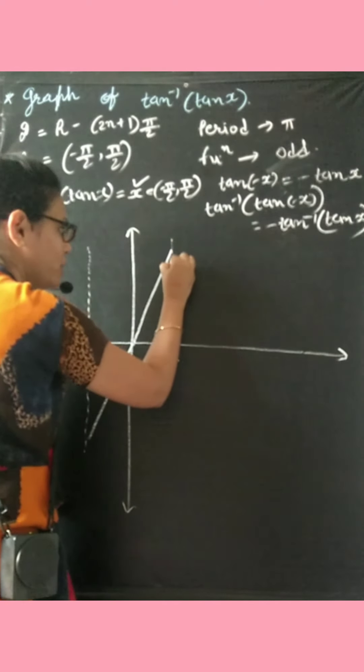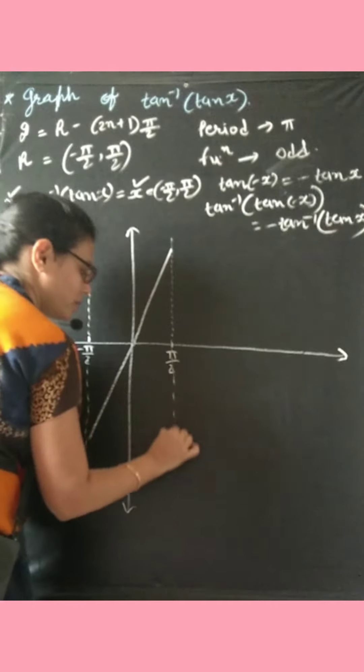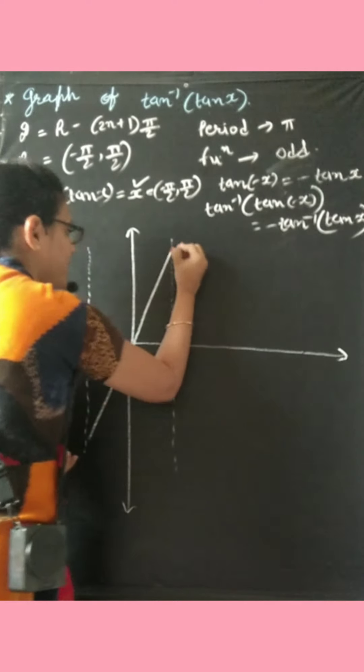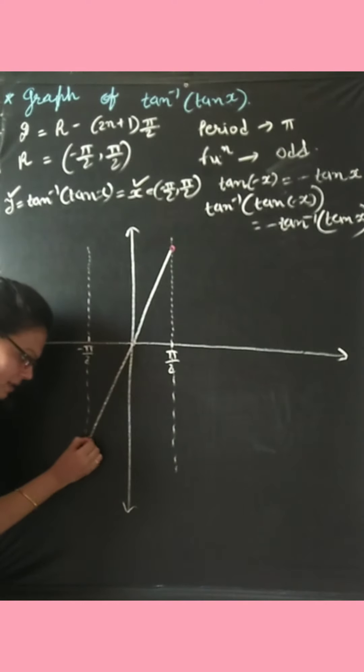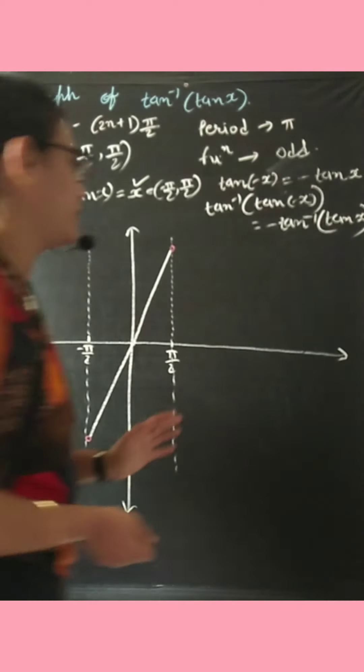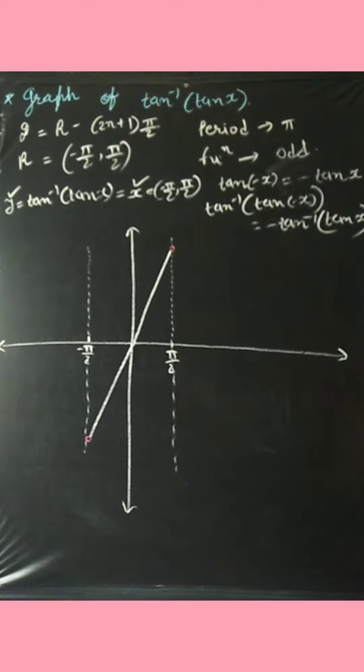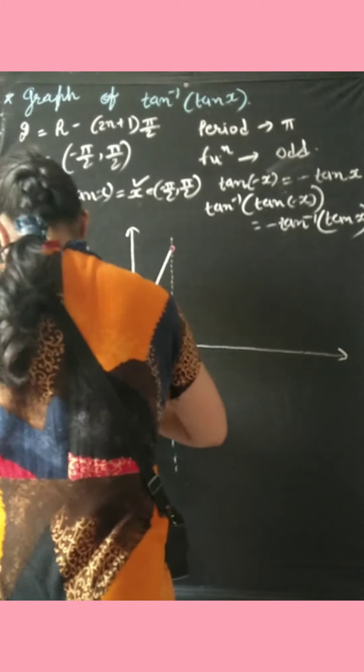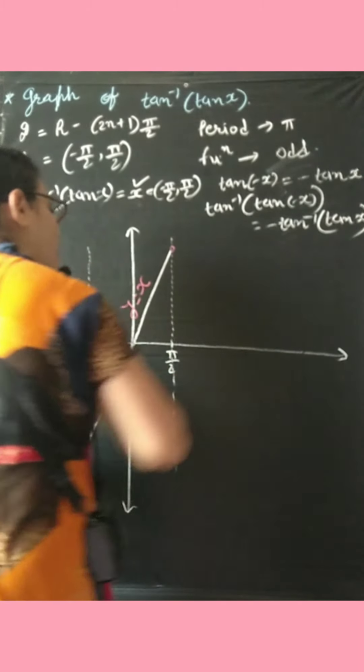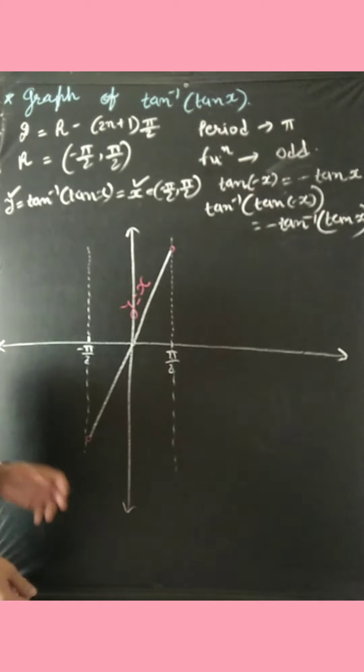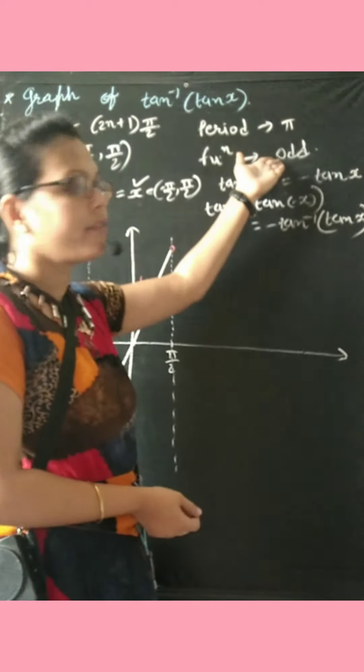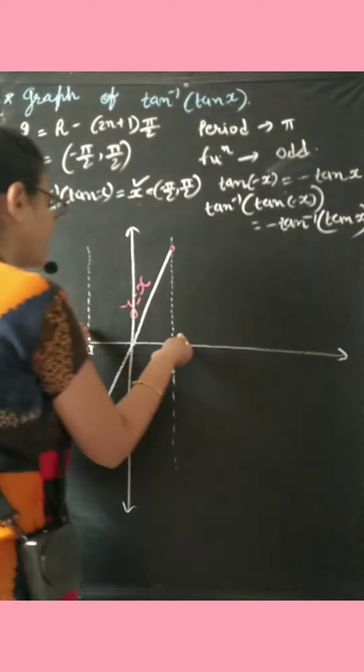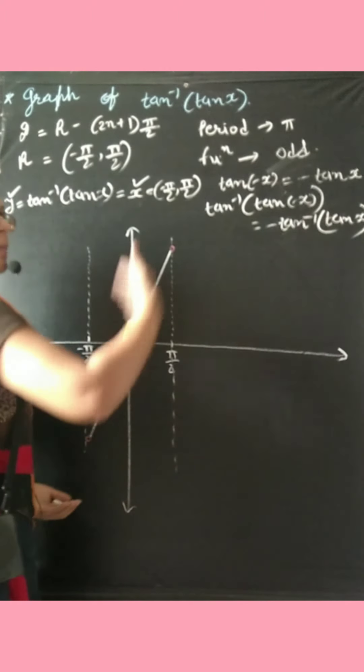Why? Because that is range of tan inverse. So here your function directly goes as y equal to x, and this is odd function. Now I hope you guys are all clear that for odd function, your graph is in positive and negative both values. For even function, your graph lies in only positive direction of y-axis. Now the main point is we cut out this point: minus pi by 2 and pi by 2. All the values, all the multiples of pi by 2 we cut it out.